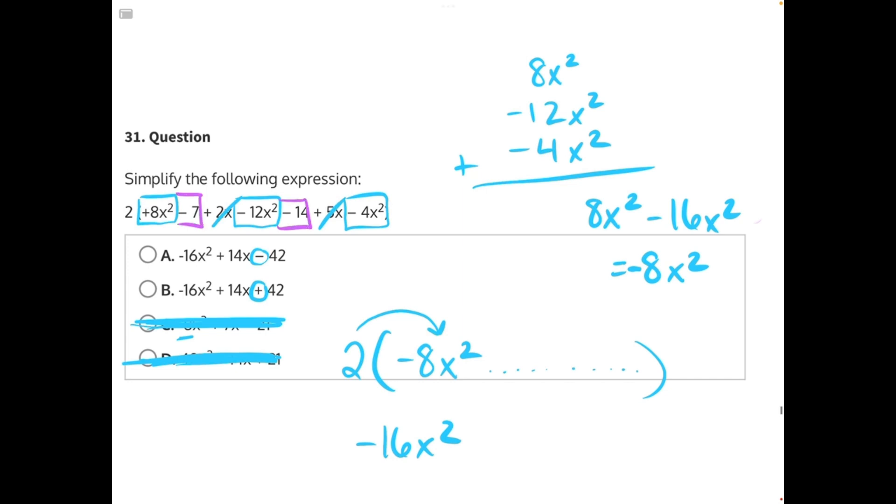So here we are combining negative 14 plus negative 7. Adding two negative numbers together is just like regular addition, but it will stay negative. So 7 plus 14 gives us 21. It stays negative. So at the end of our simplified expression, we would have a negative 21.